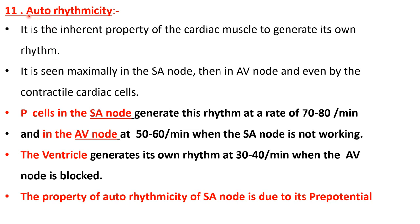Property eleven: the cardiac muscle fiber can generate its own rhythm. If you remove all nerves from the heart, keep it in normal saline with sufficient oxygen, it will produce an impulse that travels through the whole heart causing contraction. This auto-rhythmicity is maximal in the SA node at 70 to 80 beats per minute, then the AV node at 50 to 60 per minute when the SA node is not working, and the ventricle at 30 to 40 per minute when the AV node is blocked.